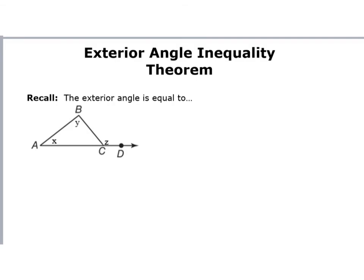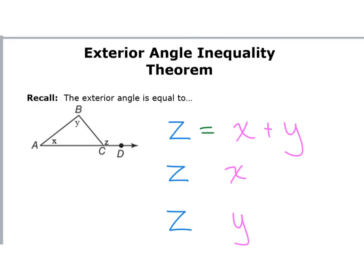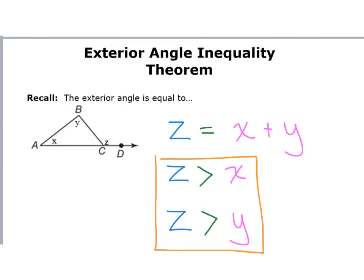So just a quick review of what we've talked about. We know that exterior angle Z takes both X plus Y to equal that value, which means Z has to be bigger than X individually and bigger than Y individually. Z has to be bigger than X because it takes X plus Y, and Z has to be bigger than Y because it takes Y plus X to make Z. This is the Exterior Angle Inequality Theorem: the exterior angle has to be greater than the remote interior angles. Thank you so much for watching.